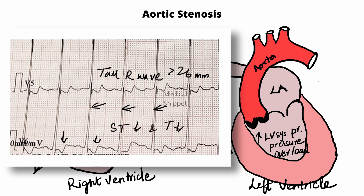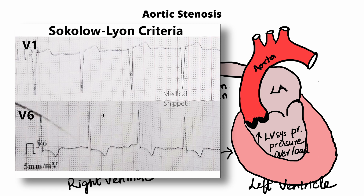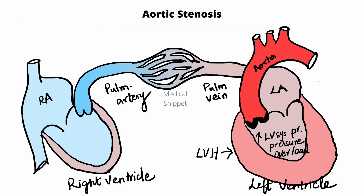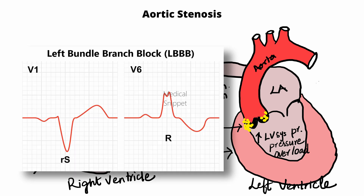Left ventricular hypertrophy can also be diagnosed by the Sokolov-Lyon criteria — that is, R in V5 or V6 plus S wave in V1 should be more than 35 mm. An additional ECG change in left ventricular hypertrophy is left axis deviation. In severe calcific aortic stenosis, extension of calcium into the conduction system can cause heart block and left bundle branch block.